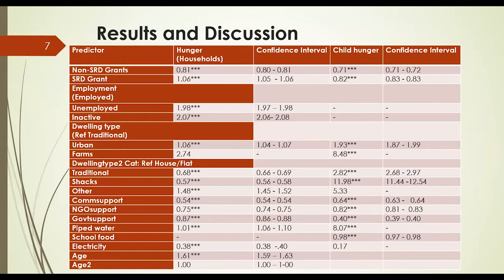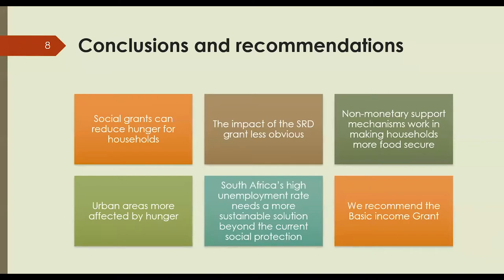The SRD grants lessened the chances of child hunger, suggesting they had a positive impact on children's access to food more than for adults. In conclusion, social grants reduce hunger for households; however, the impact of the SRD grants was less obvious. This is probably due to the minimal value of the grant.